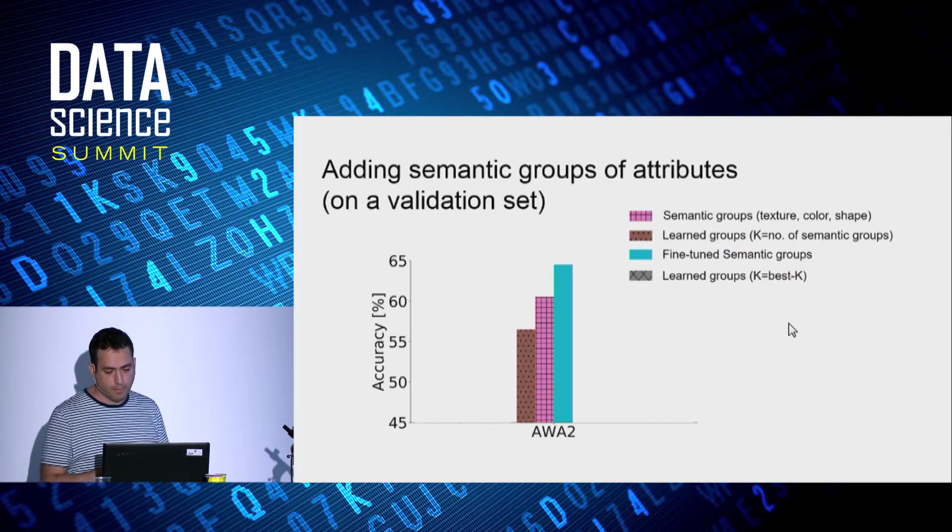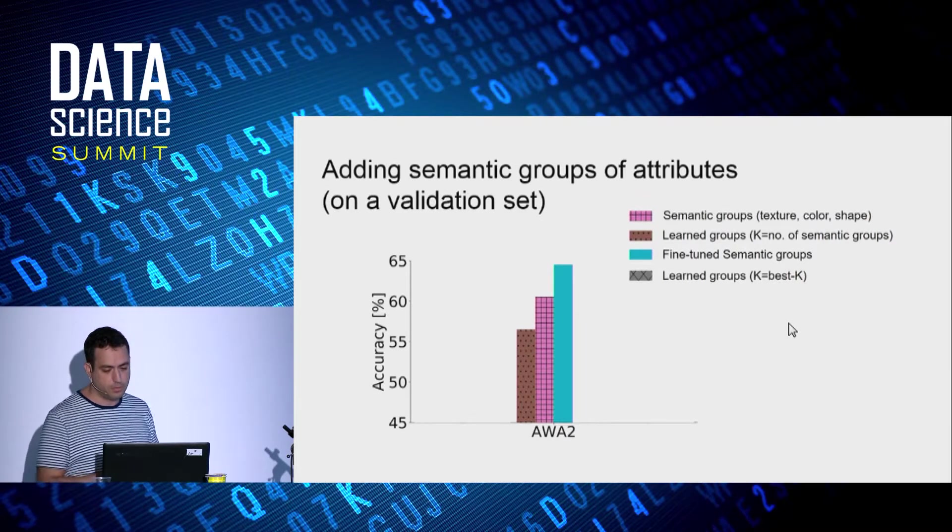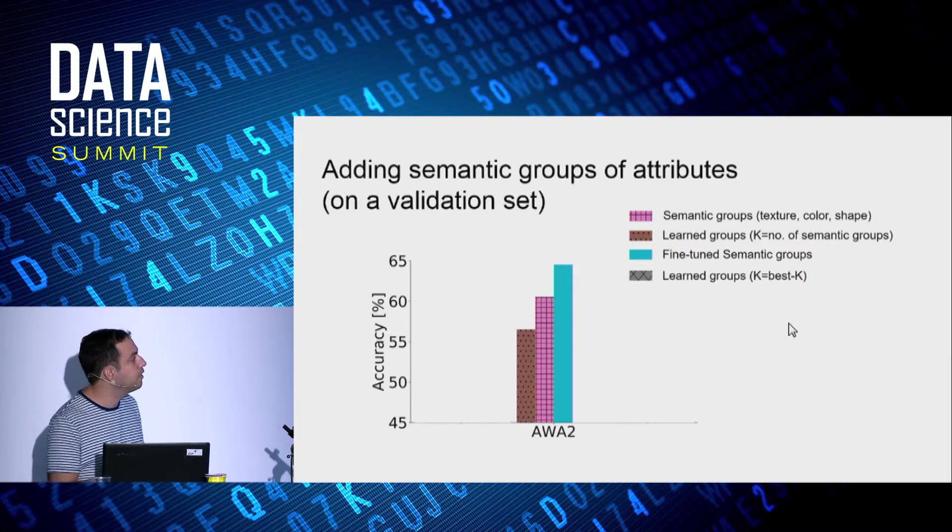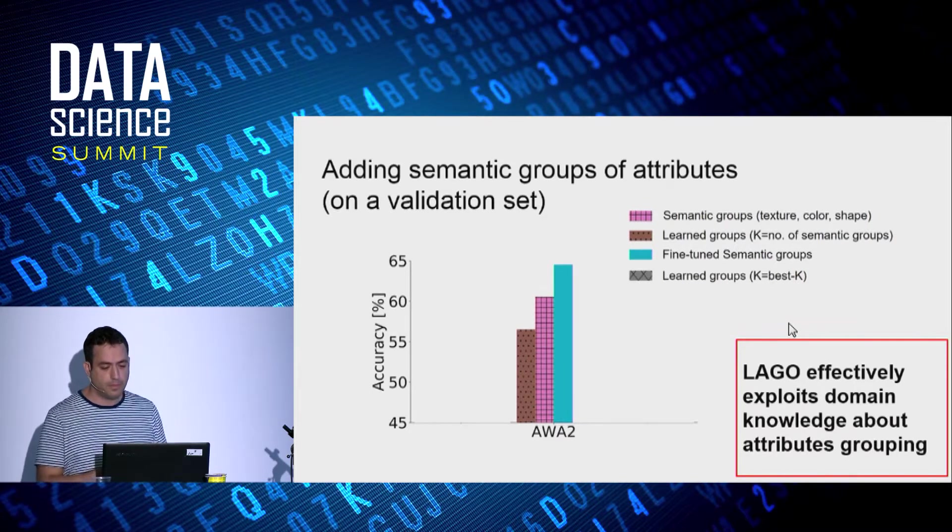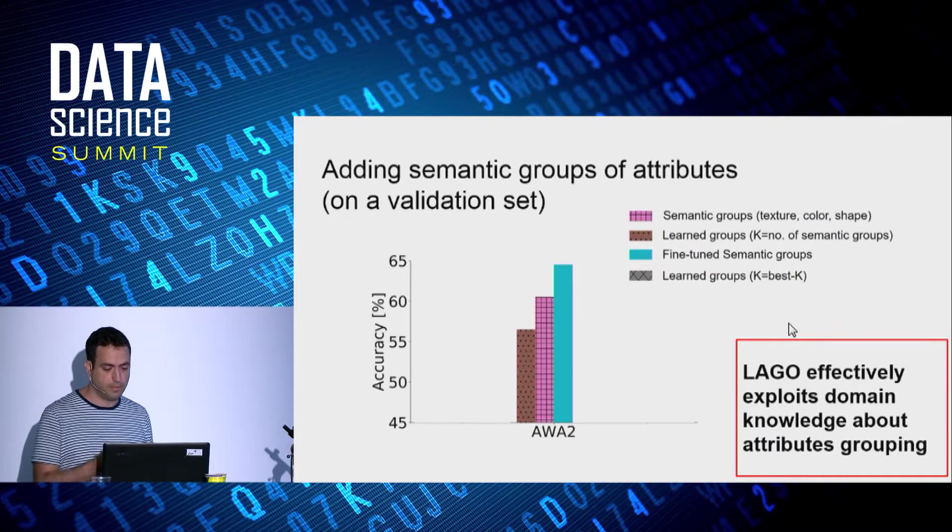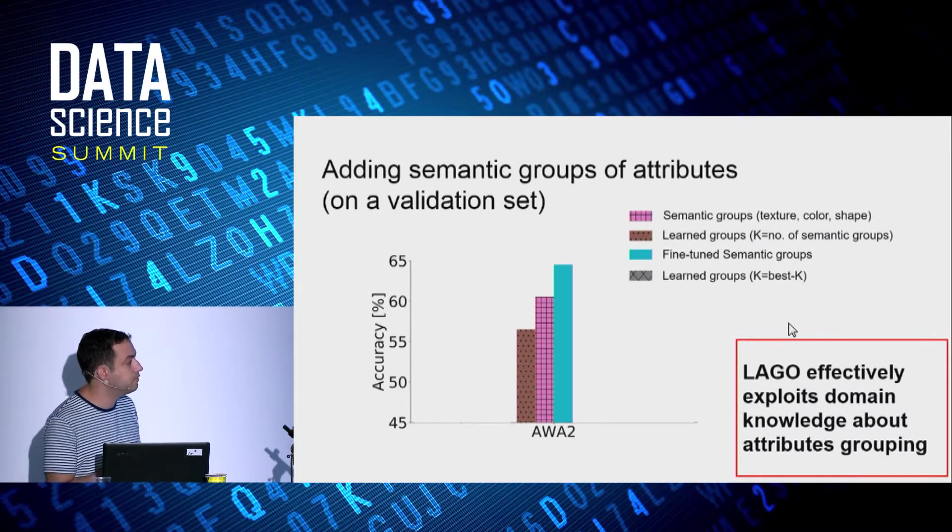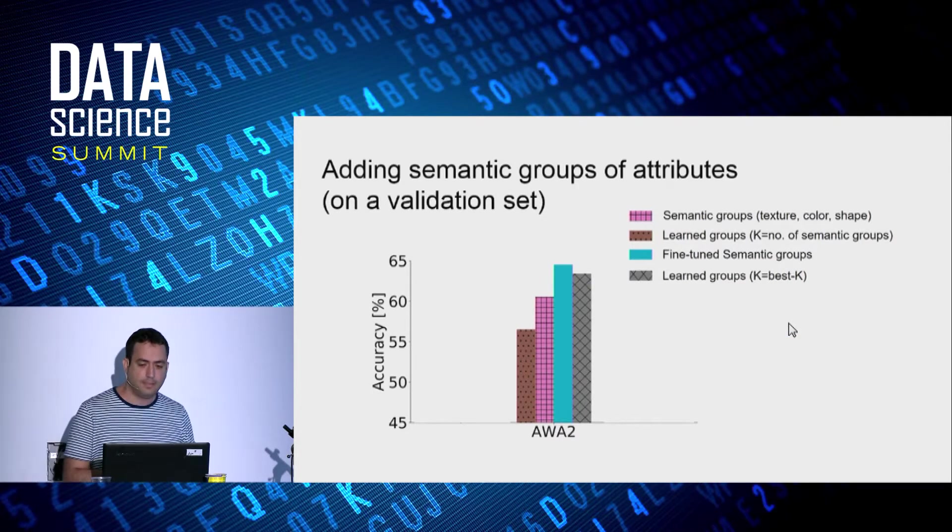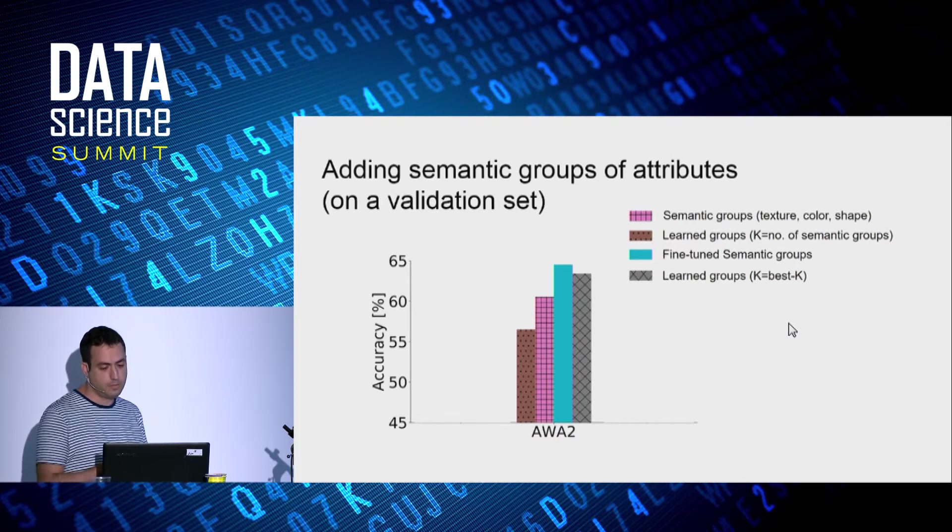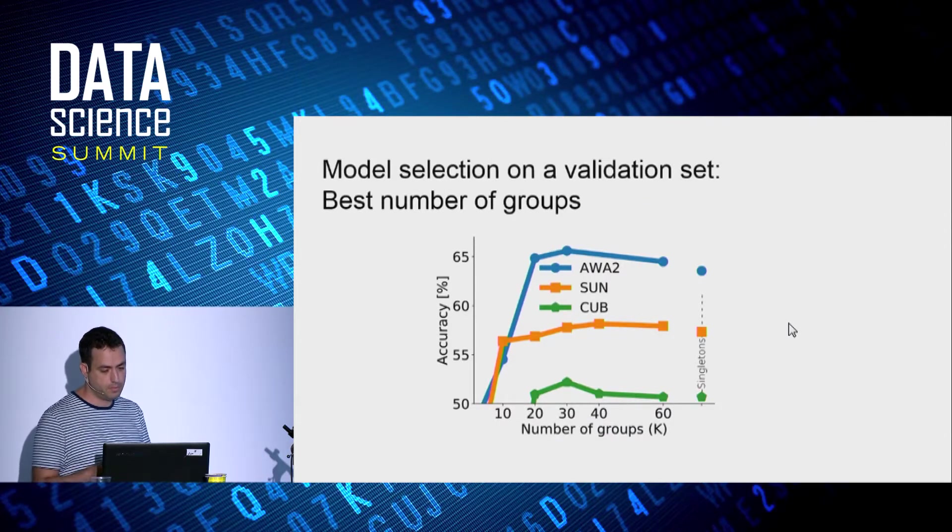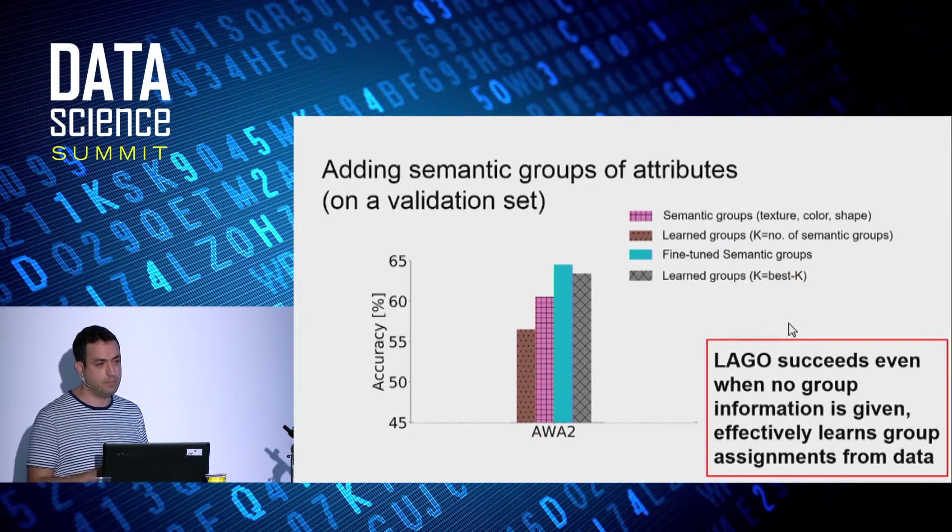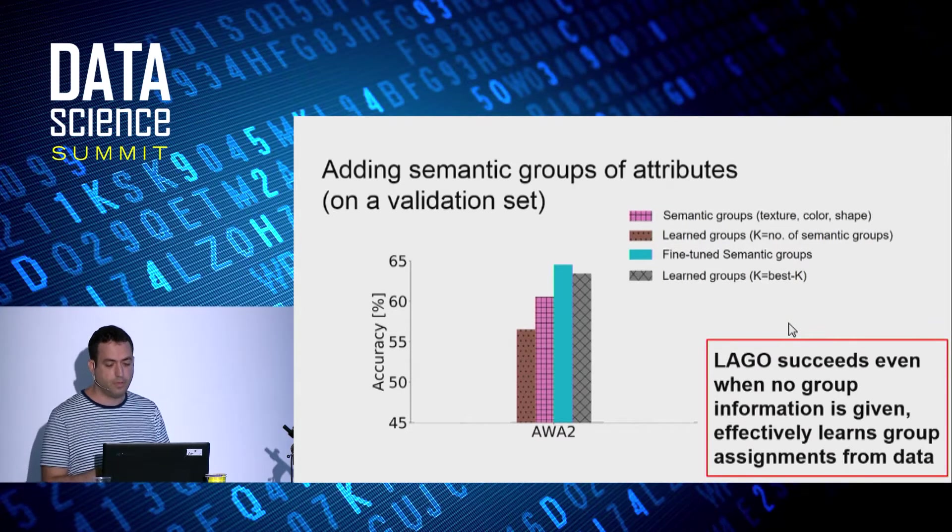In the blue bar, we make the same experiments as the pink bar with the semantic groups, except that we allow to fine-tune the semantic group assignment during training. Comparing the blue bar to the pink bar and the brown bar shows that LAGO effectively exploits domain knowledge about attribute grouping. The last LAGO variant, in gray, learns the groups from data, with k as the best number of groups. This is the result from the first experiment. And again, this shows that LAGO succeeds even when no prior group information is given, effectively learning group assignments from data.